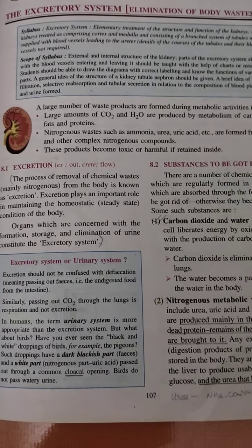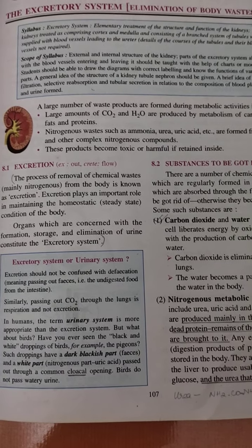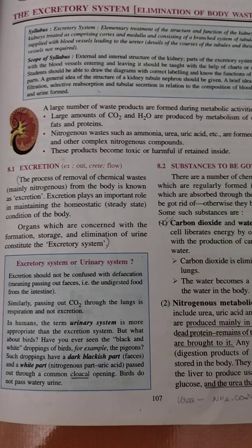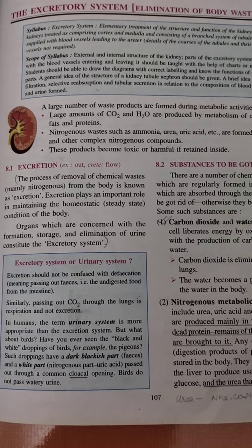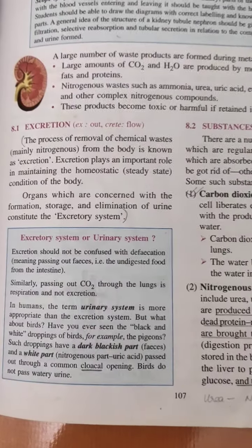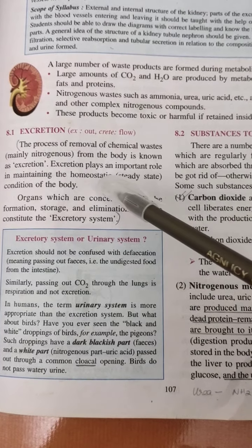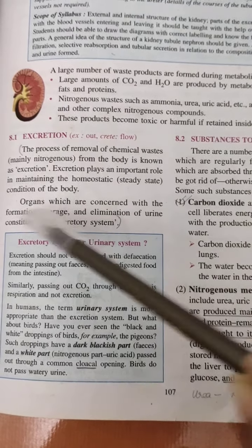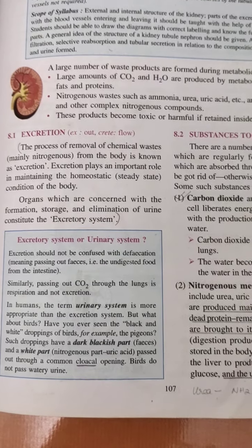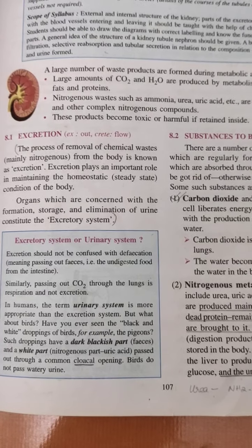The excretory system — we all know a bit about it, that it is carried out by our kidney. Kidney is the main excretory organ, and the process of removal of chemical wastes from the body is known as excretion. Mainly these wastes are nitrogenous wastes. Excretion plays a very important role in maintaining homeostasis, which means the steady state condition — the salt, water and ionic balance in our body.